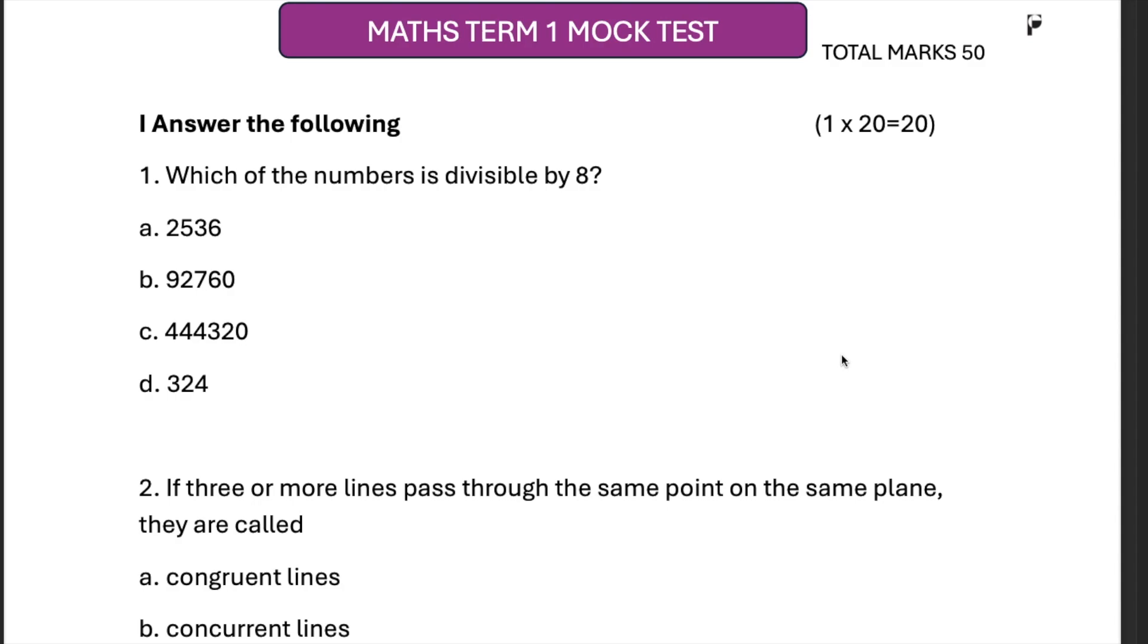Similarly, for a number to be divisible by 4, the last two digits should be divisible by 4.